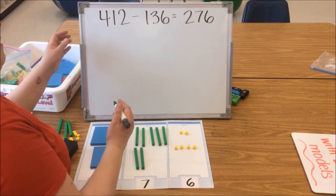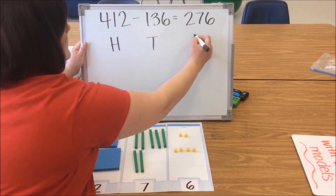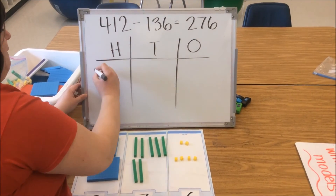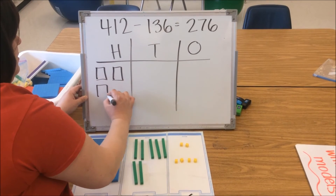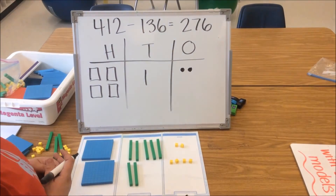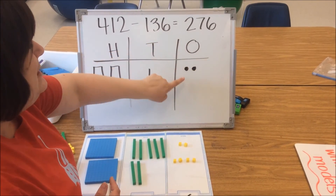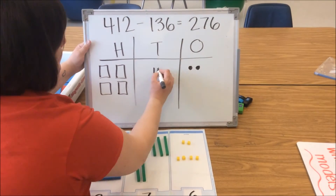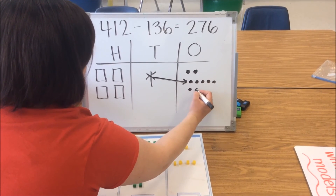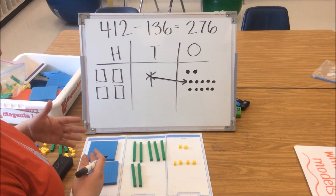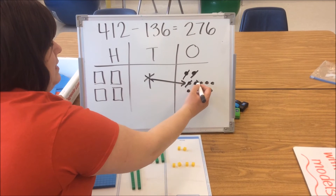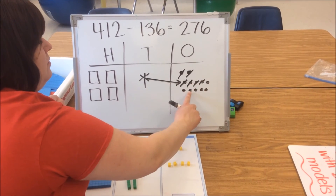Now we're going to show you how a student could model the same problem and decompose from the tens and the hundreds. So we're going to start with our first number 412 — four hundreds, one 10, and two ones. I look back at my problem and I need to take away 6 ones. Again I don't have enough ones, so I'm going to decompose that 10, draw my arrow, and make my 10 ones. Students will want to rush this step and make a messy model, but the neater their model is, the easier it is for them to count. So let's take away our 6 ones: 2, 3, 4, 5, 6. Remaining we have 1, 2, 3, 4, 5, 6.